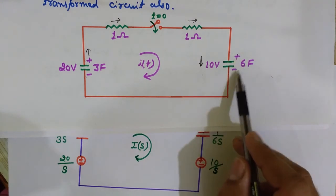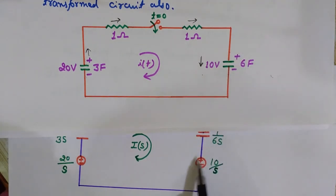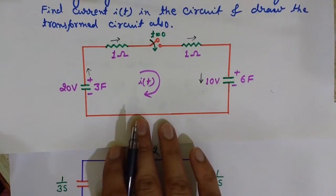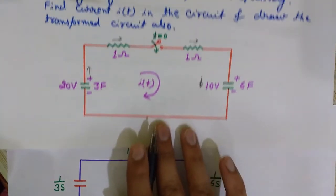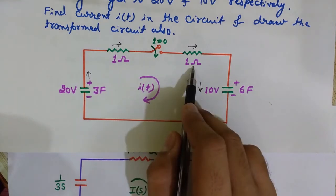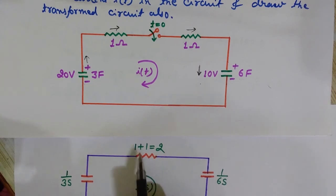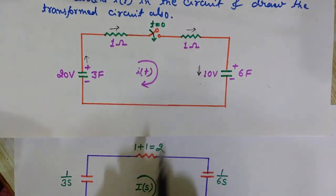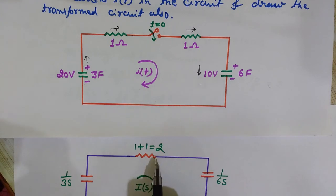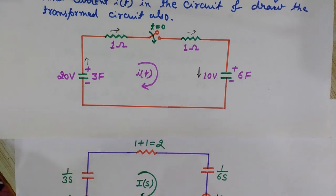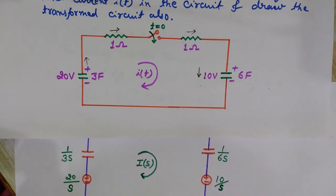For the resistors, the S-domain representation remains the same resistance value. The two 1-ohm resistors are combined as 1 + 1 = 2 ohms. This gives the complete S-domain equivalent circuit corresponding to the original time-domain circuit.